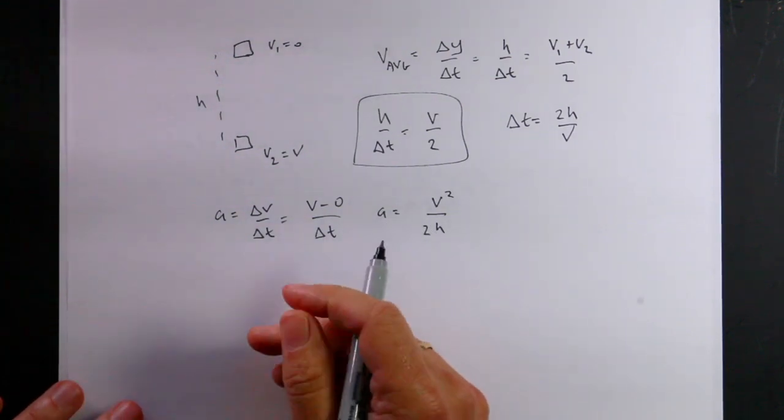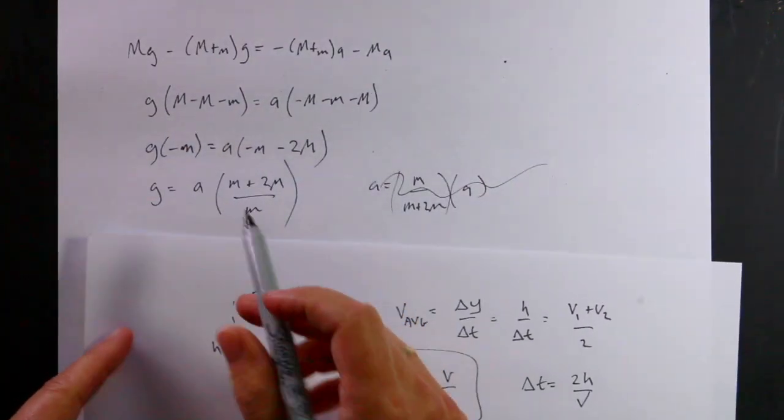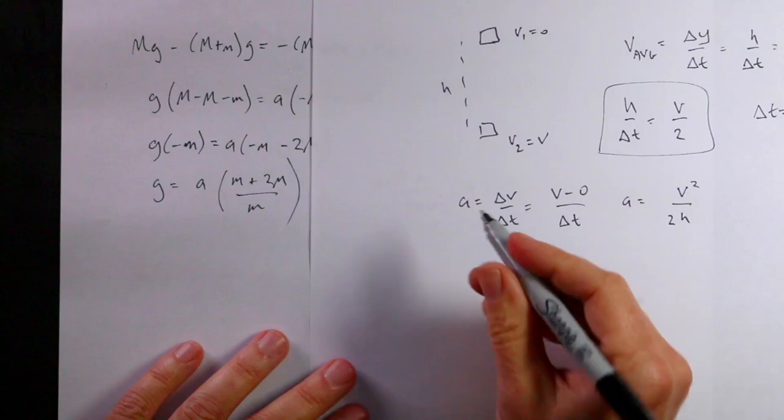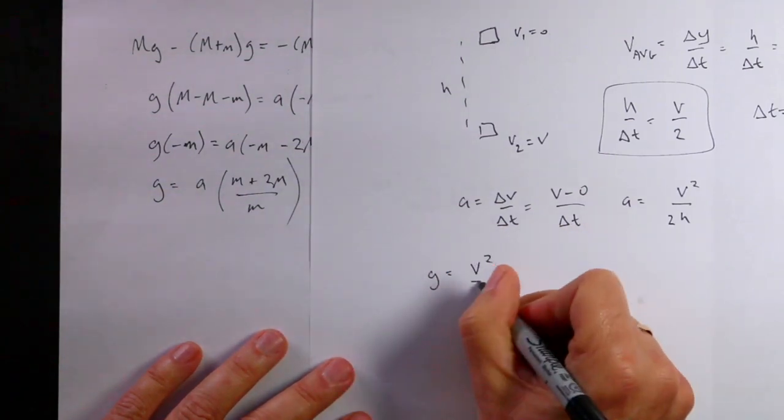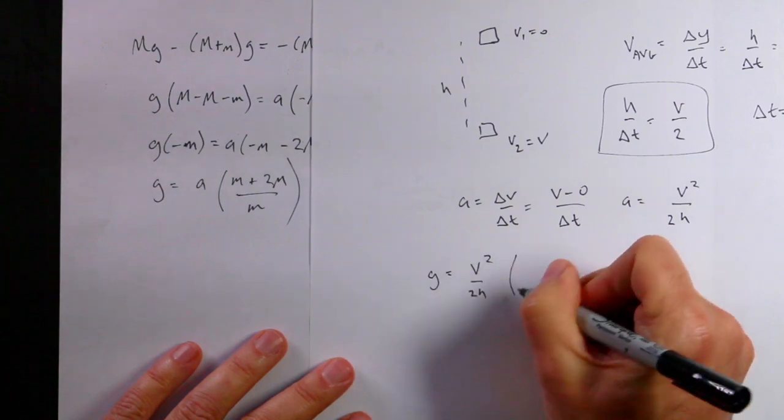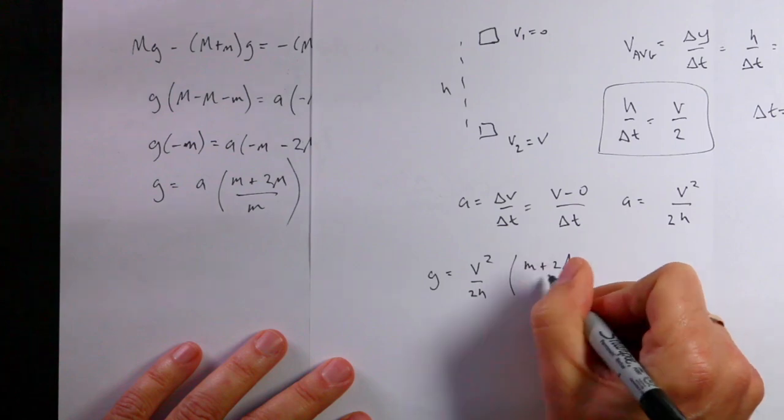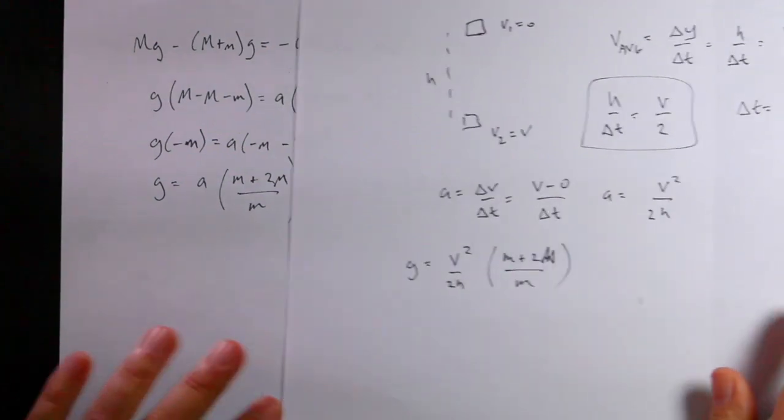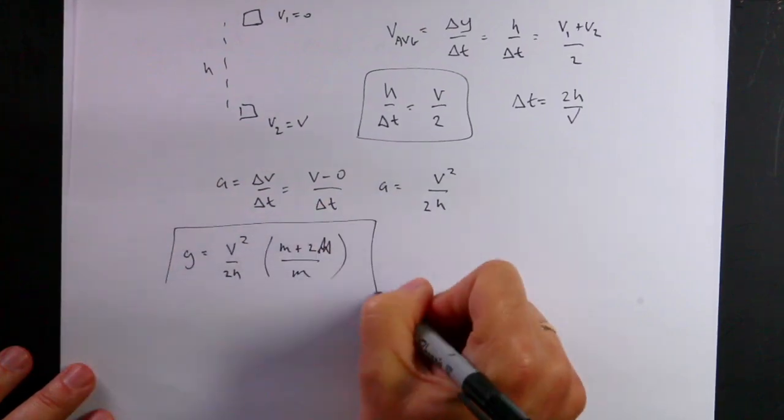Now I can plug that into my other equation, which I just, right here, I'm going to plug it in here. So I get G equals A, which is going to be equal to V squared over 2H times M plus 2M over M. And I think that's the answer. That's G in terms of those properties, like right there.